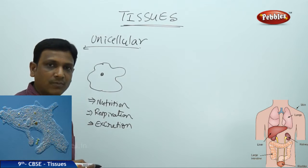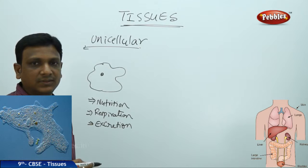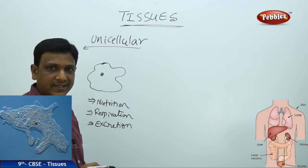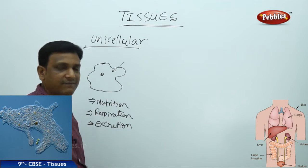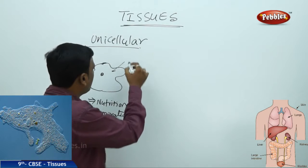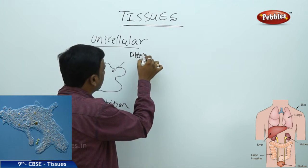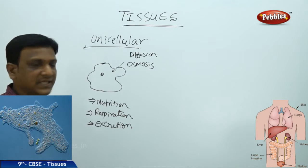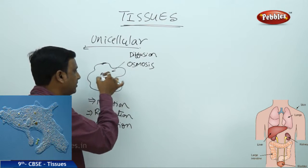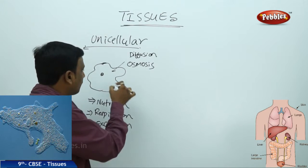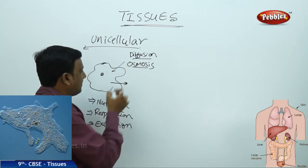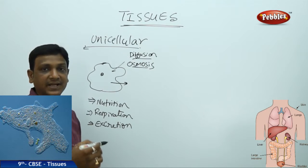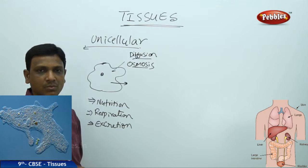Amoeba, paramecium, chlamydomonas — all these are unicellular organisms. The cell itself makes up the total organism, and they can get materials from the environment easily by simple physical phenomena which we discussed in the previous class: diffusion and osmosis. These simple physical phenomena help these organisms to obtain materials from the environment and send out waste materials, including excretion, by the same processes. They do not require anything additional, as they are made up of only one cell.